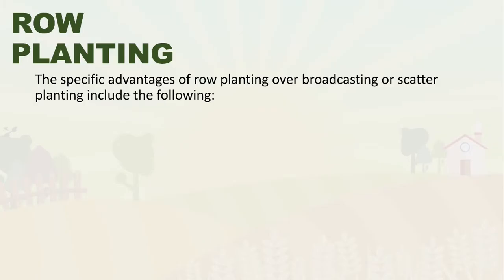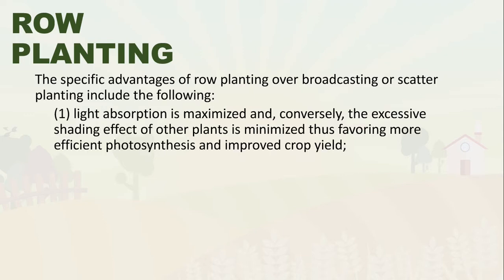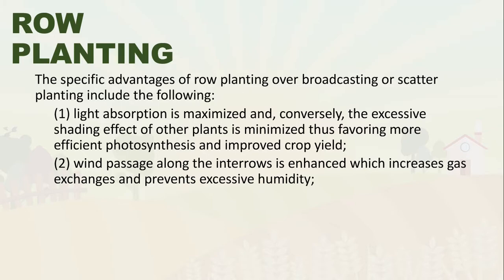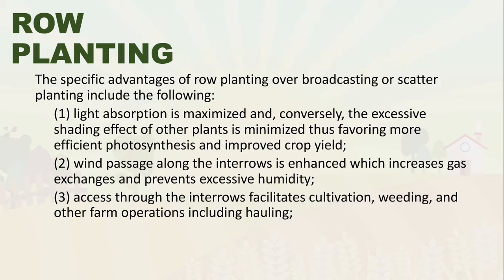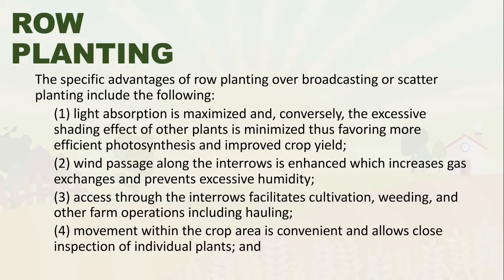The specific advantages of row planting over broadcasting or scatter planting include: light absorption is maximized and excessive shading is minimized, favoring more efficient photosynthesis and improved crop yield. Wind passage around inter-rows is enhanced, increasing gas exchange and preventing excessive humidity. Access through inter-rows facilitates cultivation, weeding, and other farm operations. Movement within the crop area is convenient, allowing close inspection of individual plants, and visibility is enhanced.